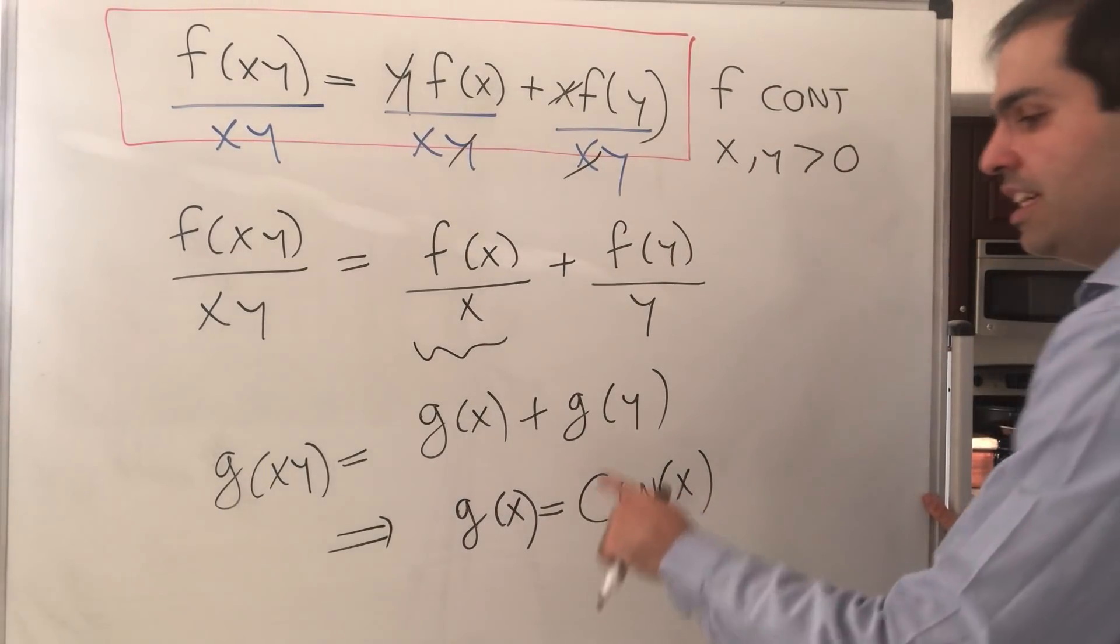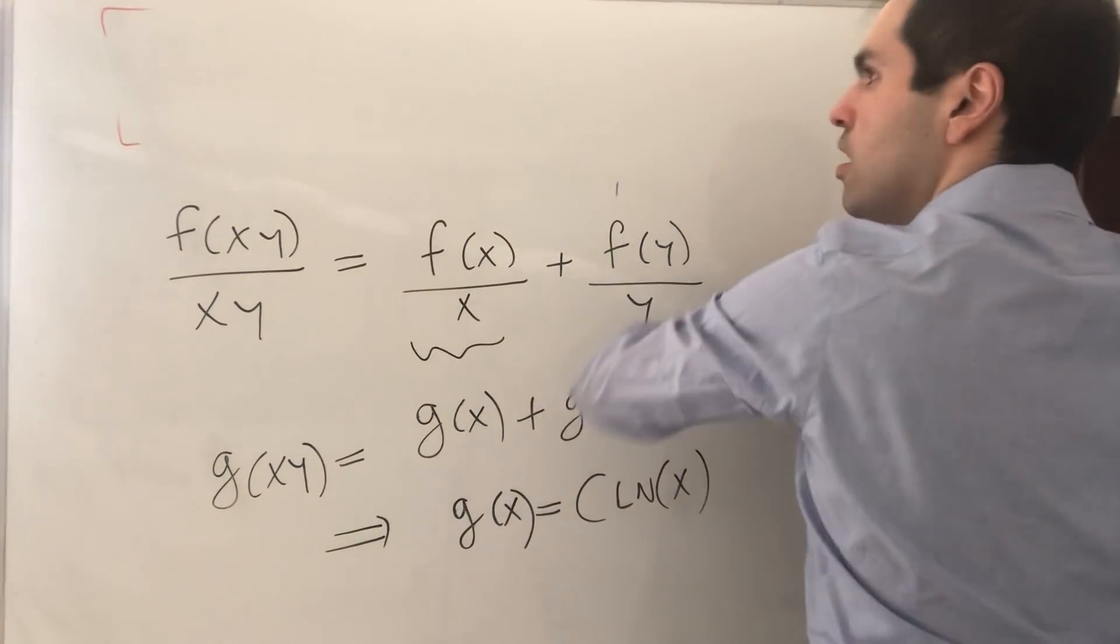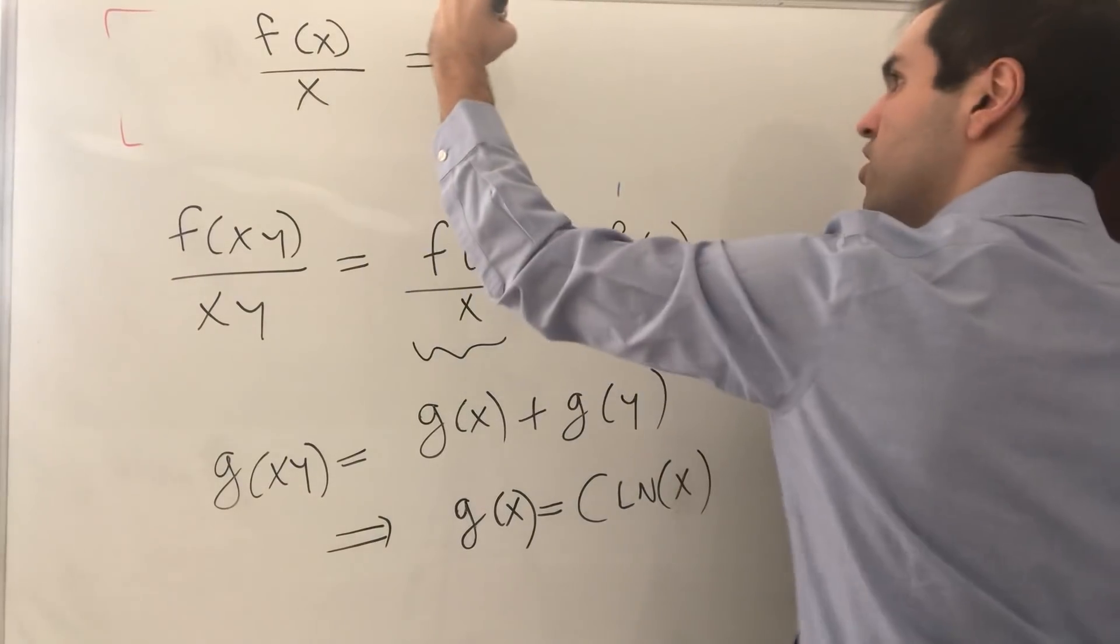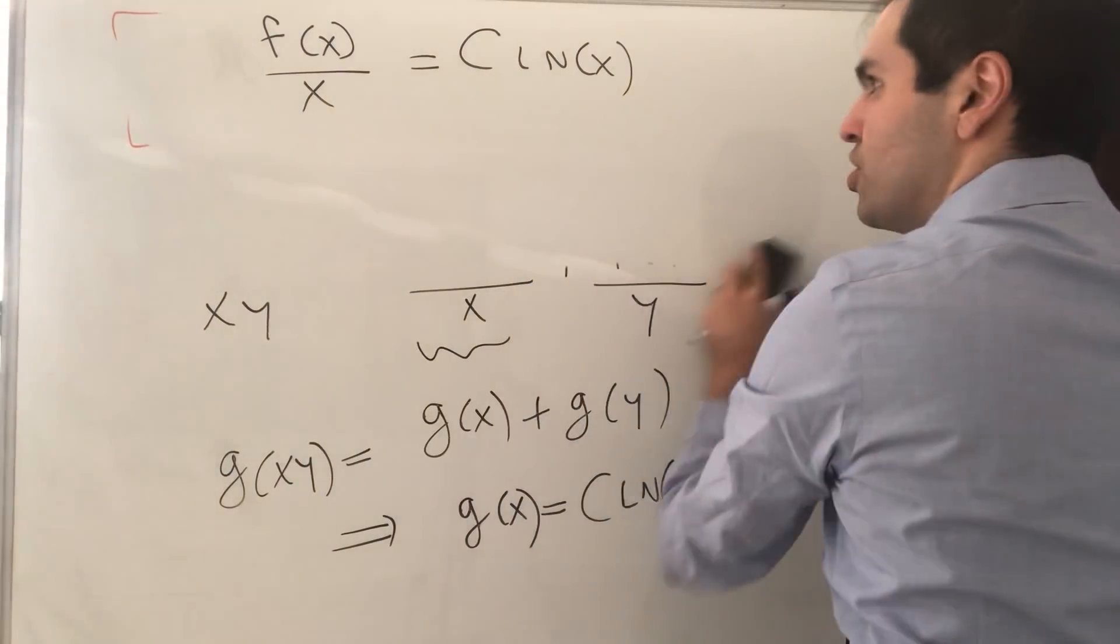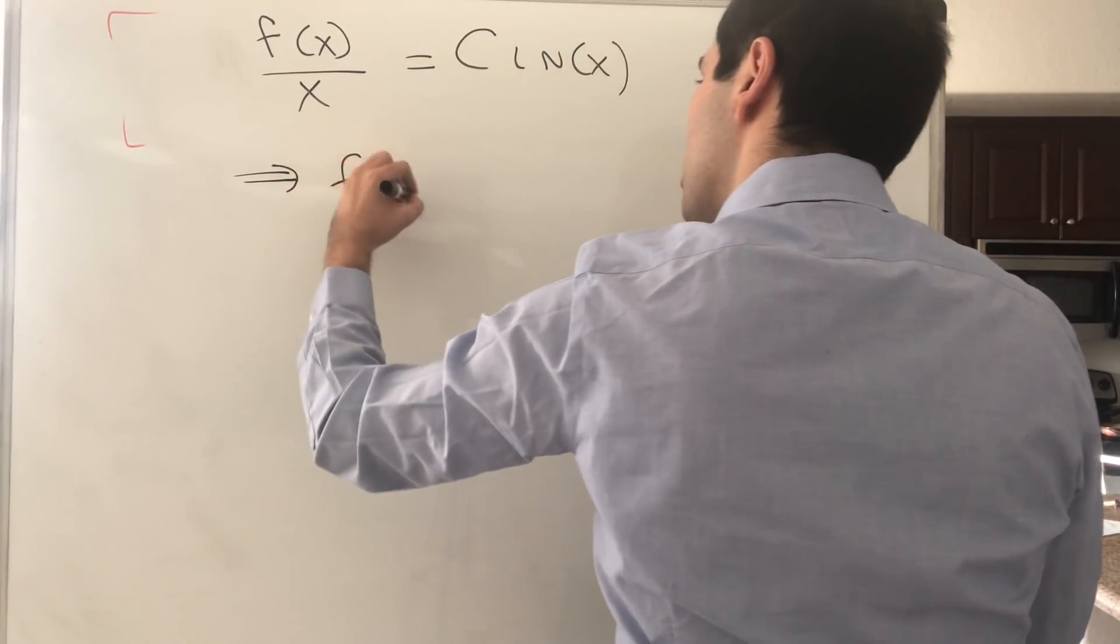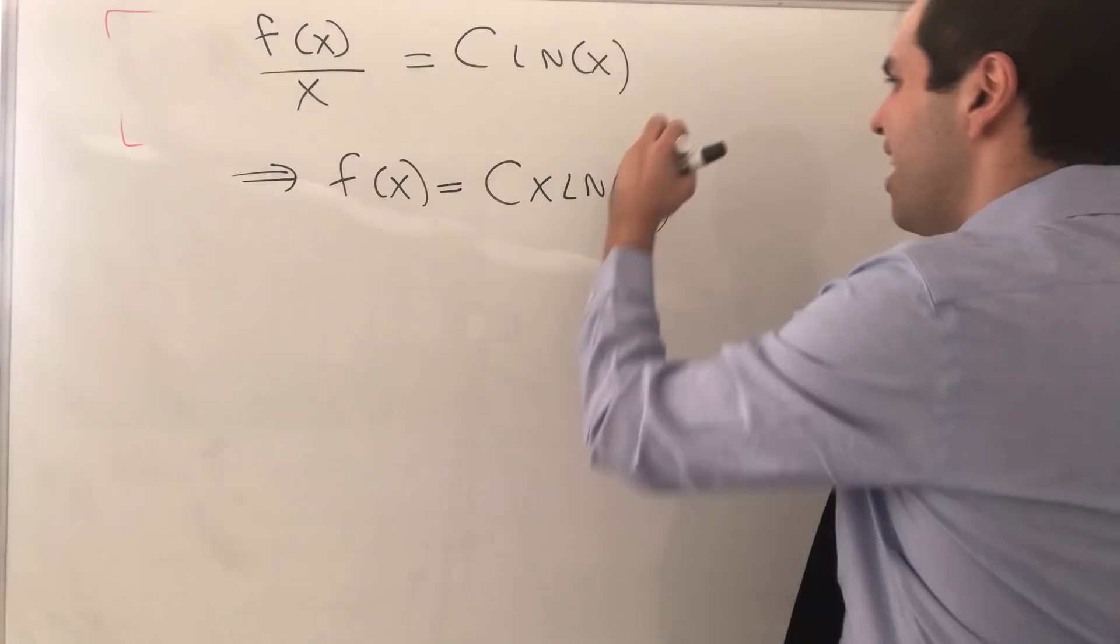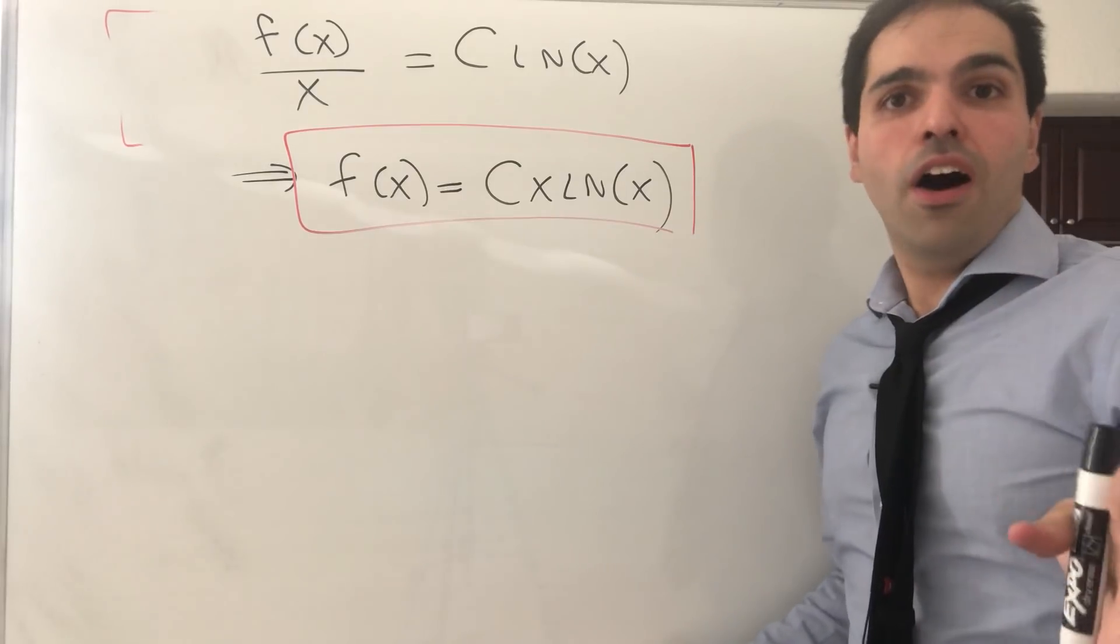But then what is g? g is f(x)/x. So then basically what we get is that f(x)/x = C ln(x), which means f(x) = Cx ln(x). And so those are all the continuous functions with x positive that satisfy the identity.